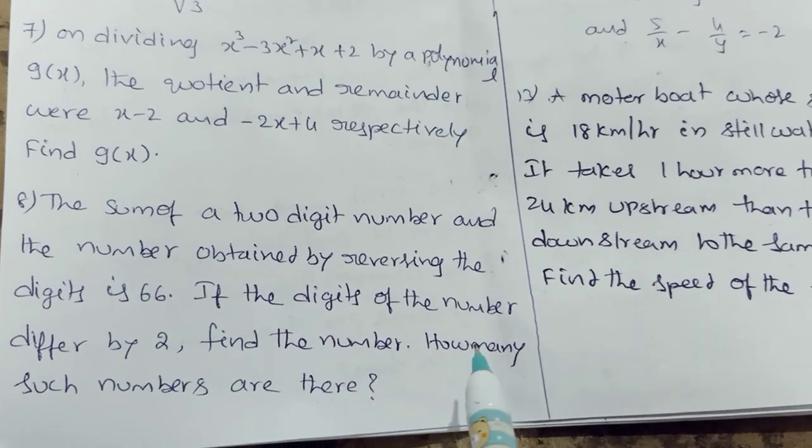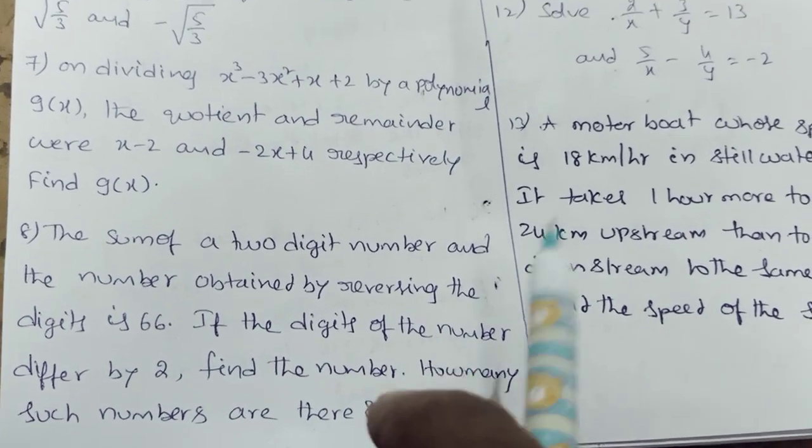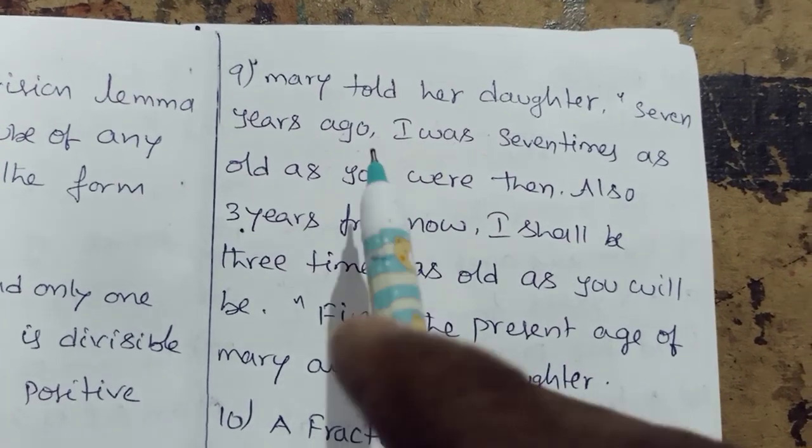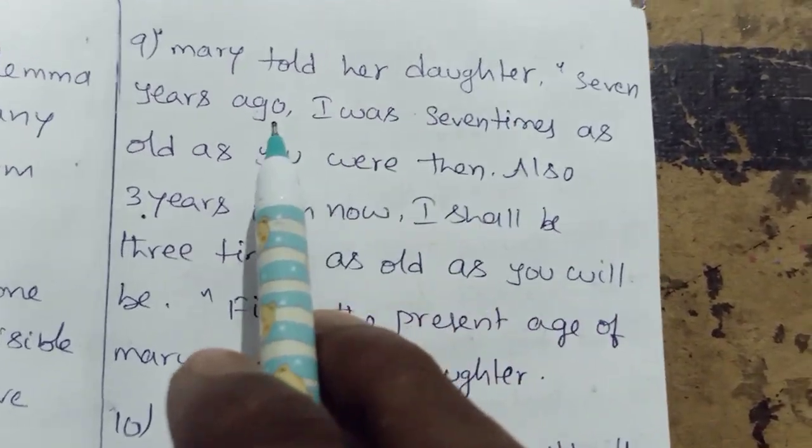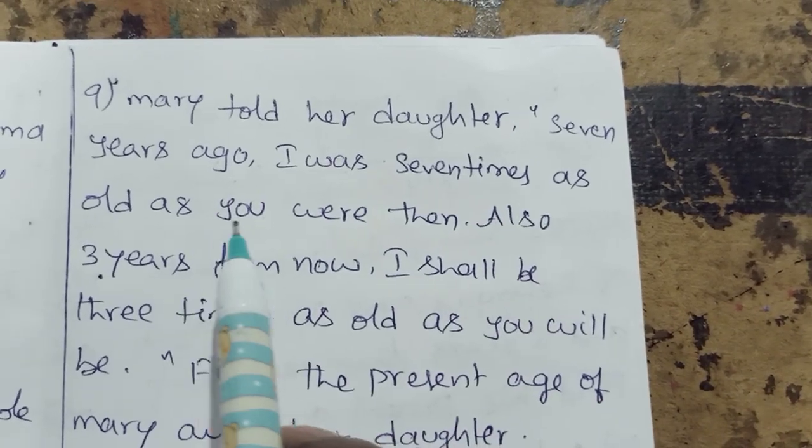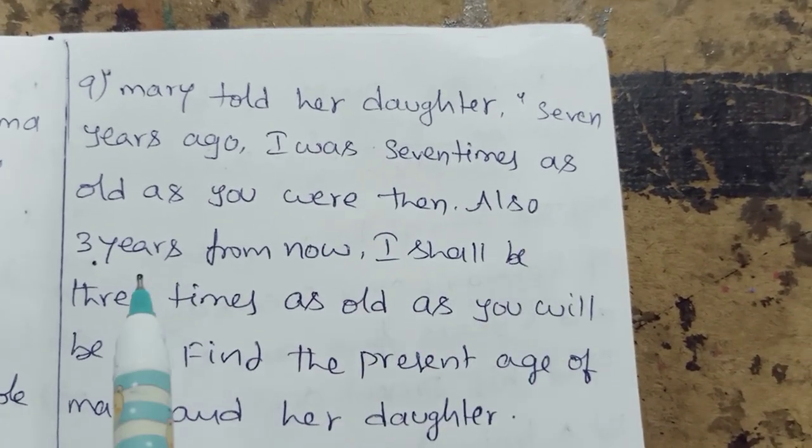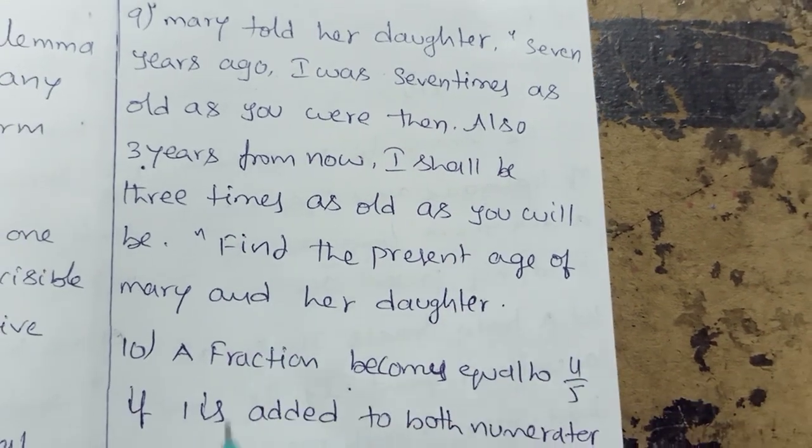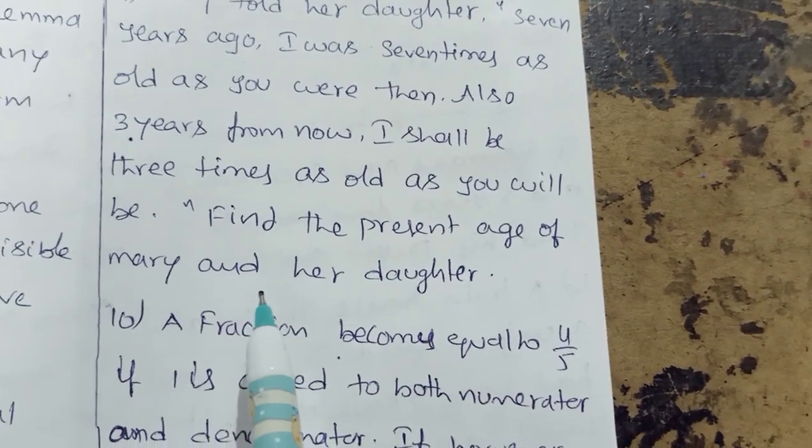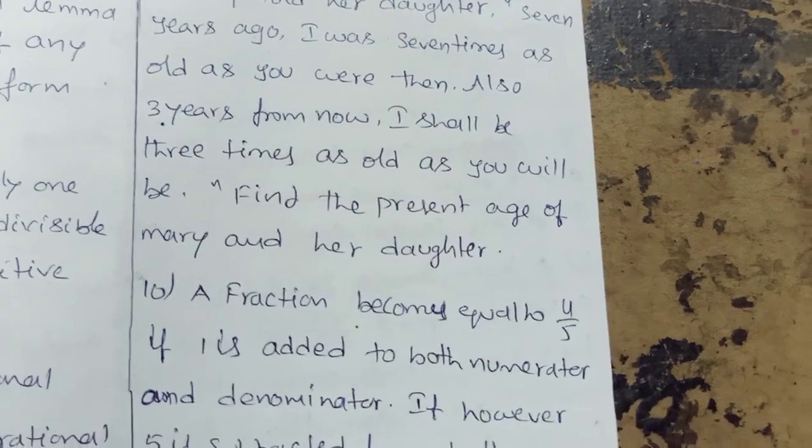On dividing X cube minus 3X square plus X plus 2 by a polynomial G of X, the quotient and remainder were X minus 2 and minus 2X plus 4 respectively. Find G of X. The next problem: Mary told her daughter, 7 years ago I was 7 times as old as you were then. Also 3 years from now, I shall be 3 times as old as you will be. Find the present age of Mary and her daughter.